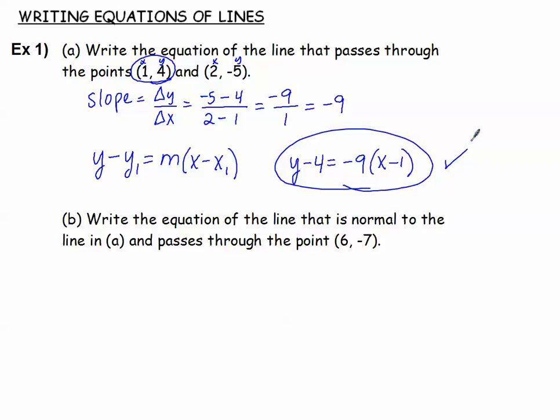Let's take a look at part b. Write the equation of the line that is normal to the line in part a and passes through the point (6, -7).